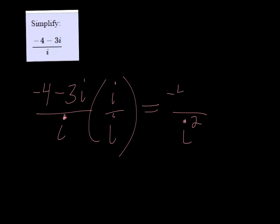So on the top, we're going to get negative 4i minus 3i squared. And then we need to change all of our i squared to negative 1, so negative 4i minus 3 times negative 1, all over negative 1.